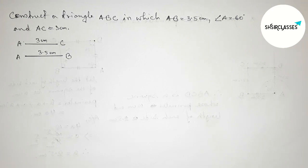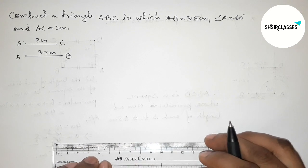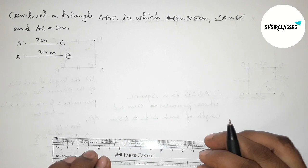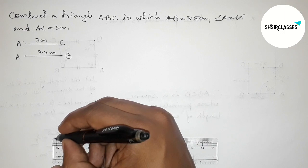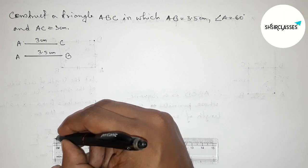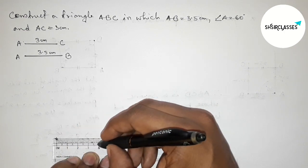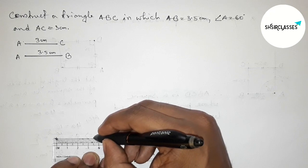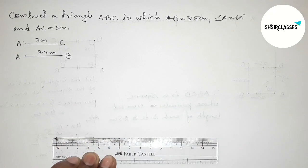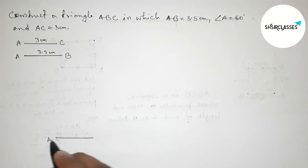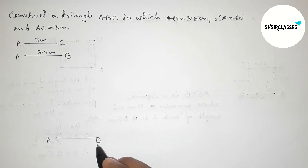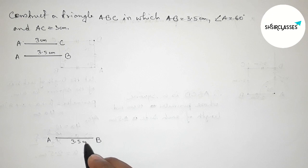Now we draw the line AB equals 3.5 centimeters on our construction. This is starting at 0 and this is the 3.5 centimeter line. Taking point A at the start and point B at the end, so AB equals 3.5 centimeters.